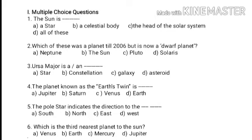Third one: Ursa Major is a — first option, star; second option, constellation; third option, galaxy; fourth option, asteroid. Which is the correct answer? Constellation is the correct answer.